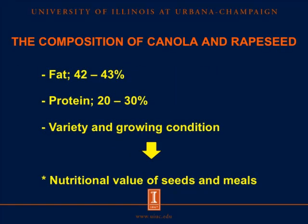For the composition of canola and rapeseed, the seeds themselves contain fat ranging from 42% to 43% and crude protein ranging from 20% to 30%, depending on the variety and growing conditions in different regions around the world. These differences could affect the nutritional values of the seed and consequently affect the nutritional values in meals.